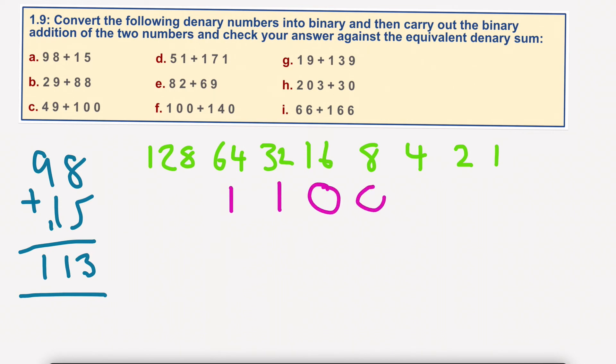0, 0, 0, 1, 0. Okay, that should equal 98. Okay, and then we're going to add 15 to it.